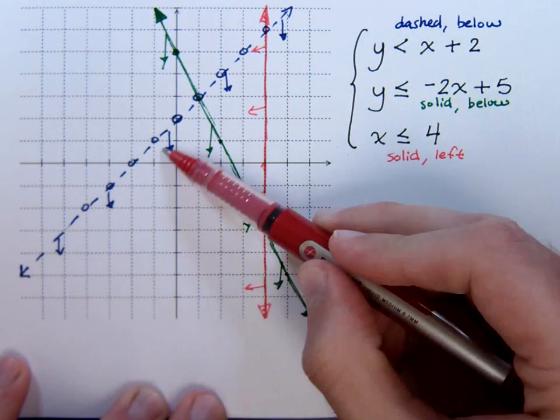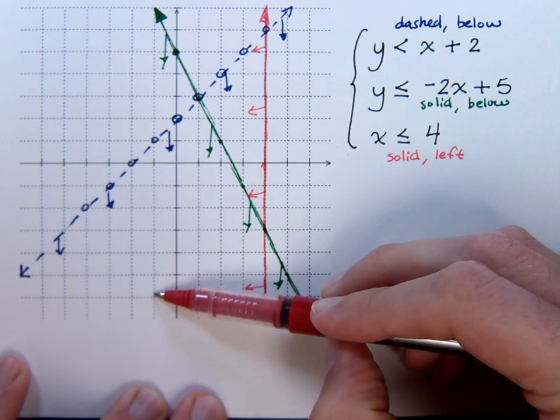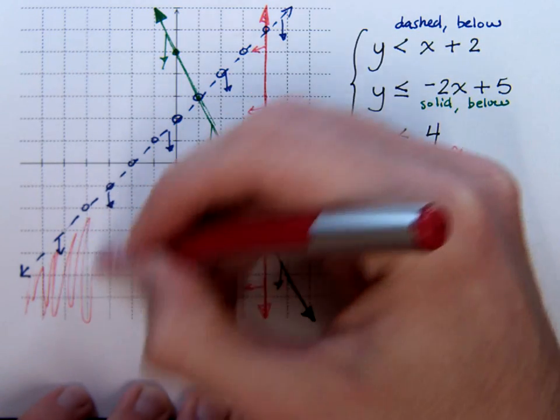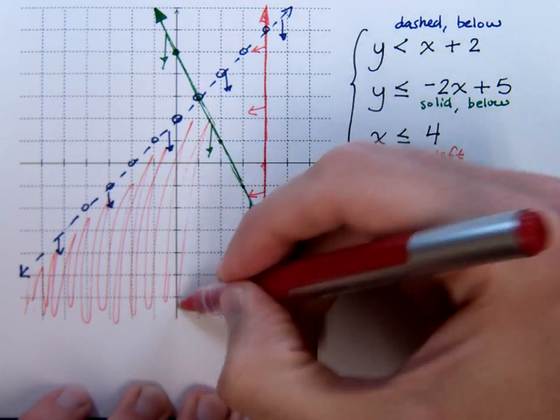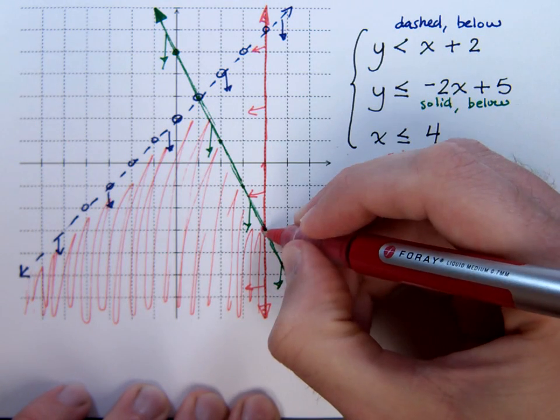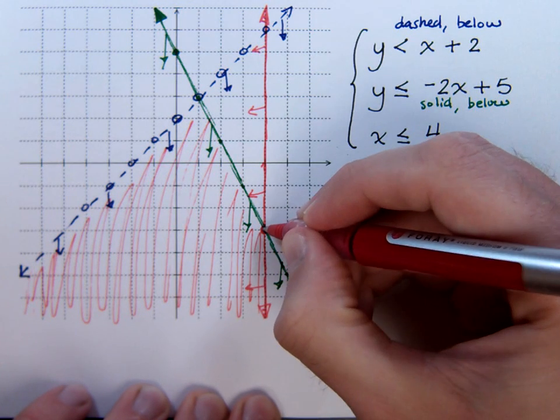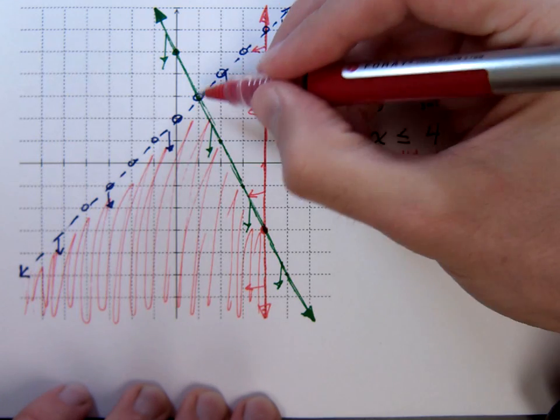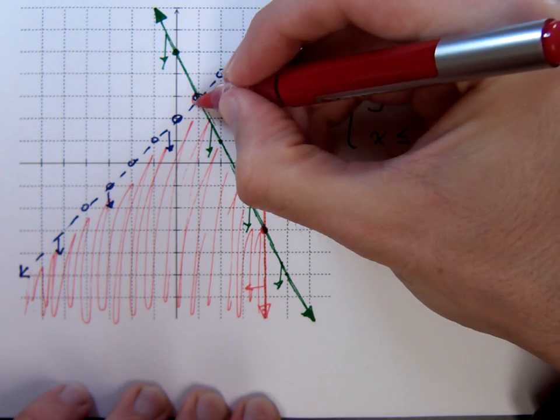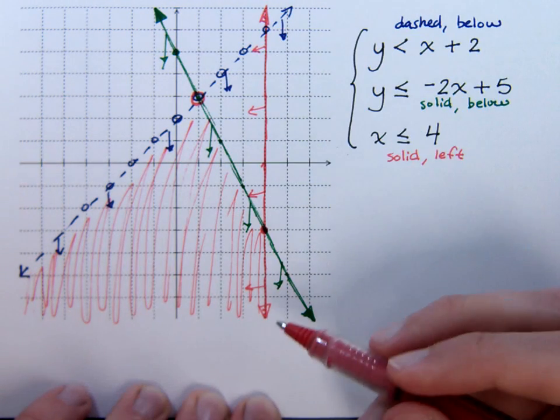So we need to be below the blue line, below the green line, and to the left of the red line. And that ends up being this section of the graph right here. We will include this point right here because where these green and red lines intersect, they're both solid. So this point is a solution. However, where the blue dashed line and the green solid line intersect will have to be open. And there's our solution set.